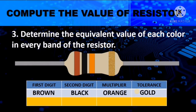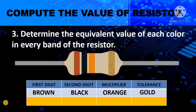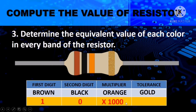Next, determine the equivalent value of each color in every band of the resistor. After identifying the colors, we now assign a value to each color. First digit, brown — according to the color coding chart, it has a value of 1. Black as the second digit has a value of 0. The multiplier, orange, has a value of 1,000. Note that orange in the first and second digit has a value of 3, but as a multiplier it has three zeros. The tolerance, gold, has a value of plus or minus 5%.